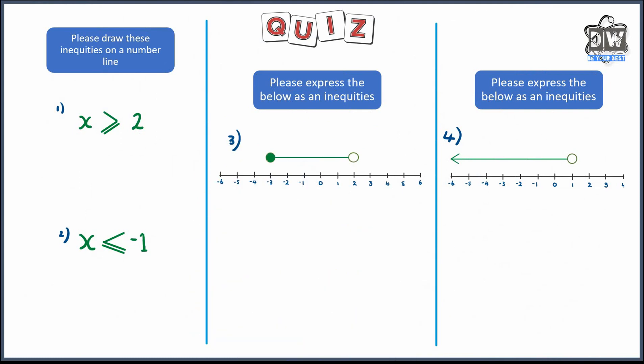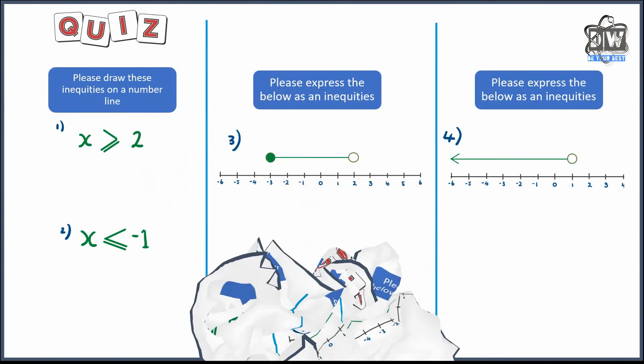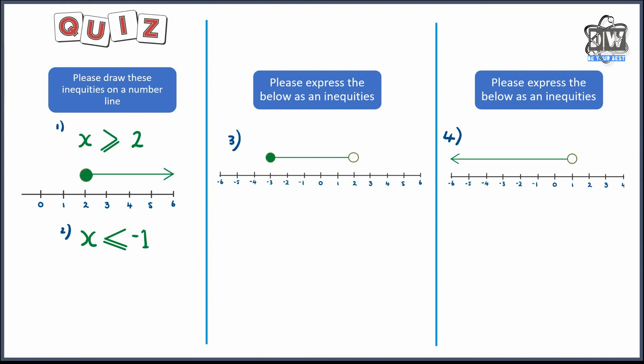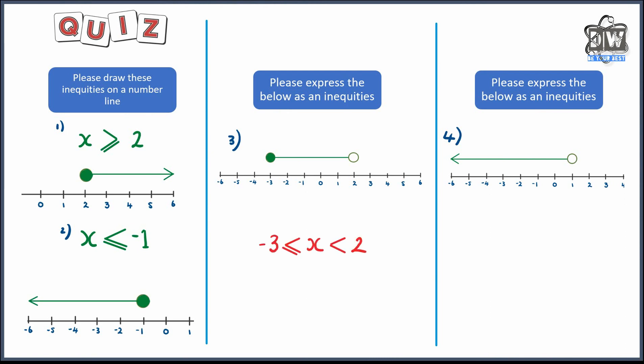Now it's time for the quiz — draw inequalities on a number line and express inequalities from number lines. Pause the video and give them a go, then come back. Here are the answers: x ≥ 2 — shaded circle on 2 going right; x ≤ -1 — shaded circle on minus 1 going left. Then for the compound ones: minus 3 shaded, 2 unshaded, line between. And x < 1 — unshaded circle on 1, going left.